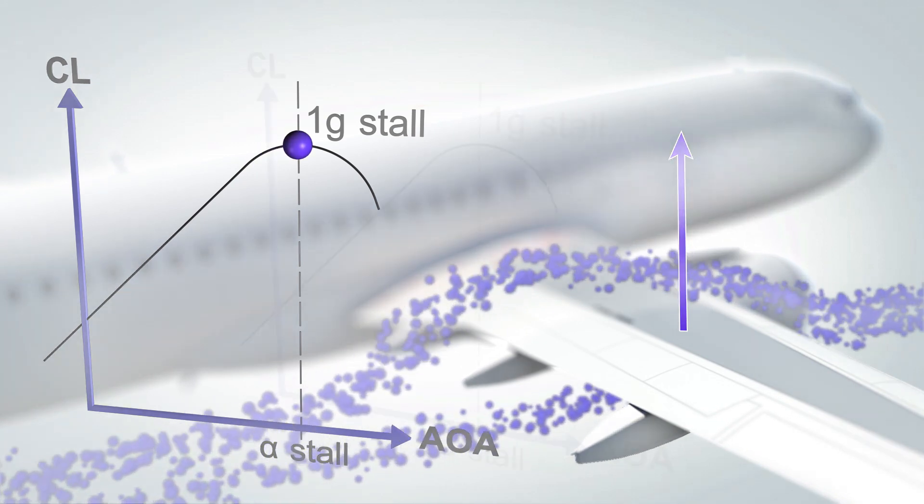Depending on the aircraft models and on the computer standard installed for flight controls, the deflection of the speed brakes can be different with autopilot engaged or in manual flight. Here, in manual flight, we can notice a rapid increase of the VLS and V-alpha prot due to the full extension of the speed brakes.